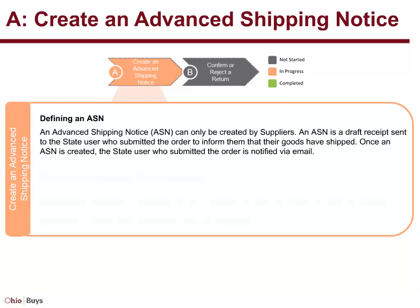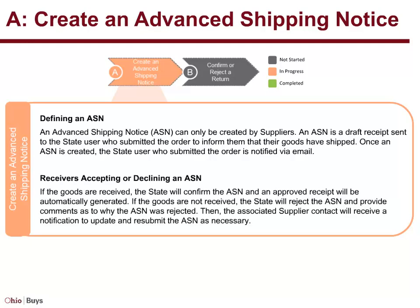Once an ASN is created, the state user who submitted the order is notified via email. If the goods are received, the state will confirm the ASN and an approved receipt will be automatically generated. If the goods are not received, the state will reject the ASN and provide comments as to why the ASN was rejected. Then, the associated supplier contact will receive a notification to update and resubmit the ASN as necessary.